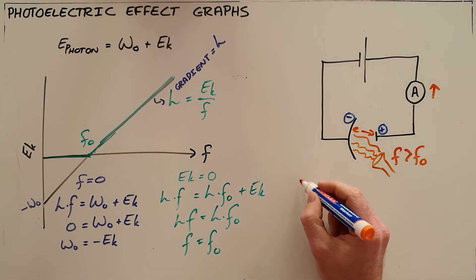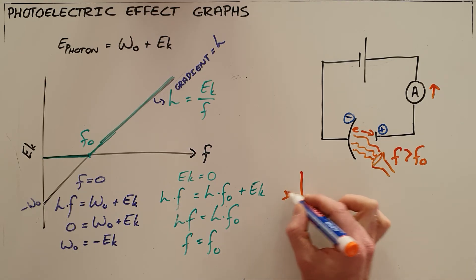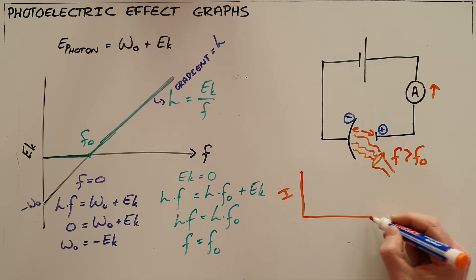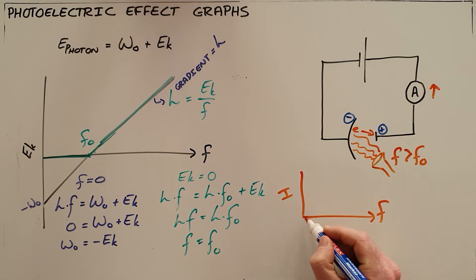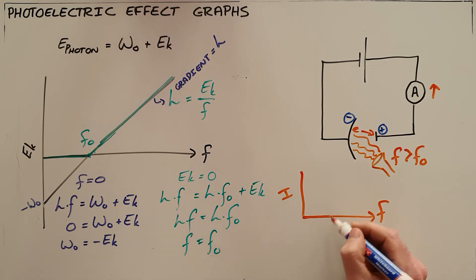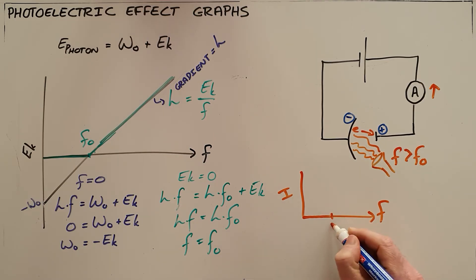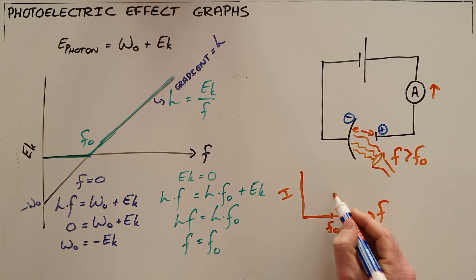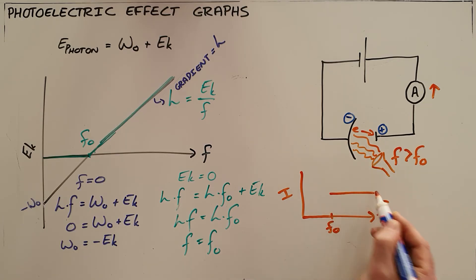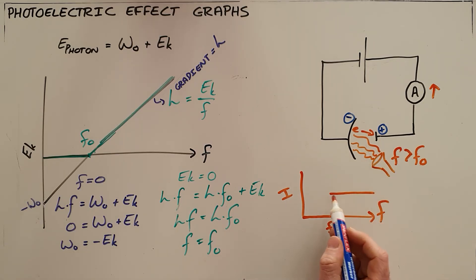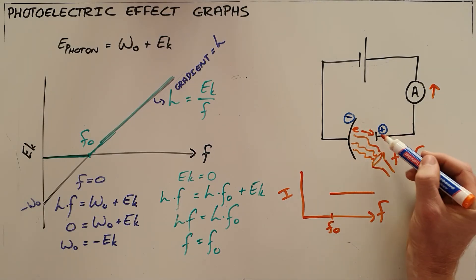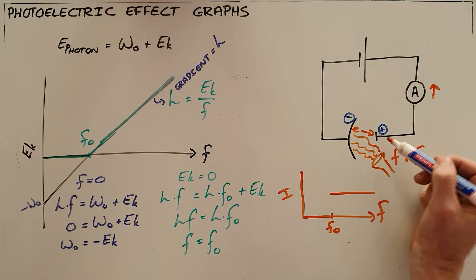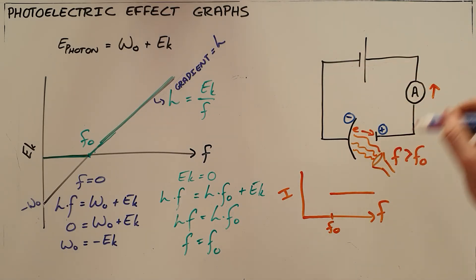The first graph we can draw from this circuit is current versus frequency. It shows that no current registers until we reach the threshold frequency. From that point onwards, a current registers because electrons are able to bridge the gap, completing the circuit and allowing current to flow.